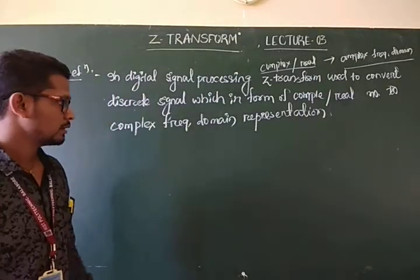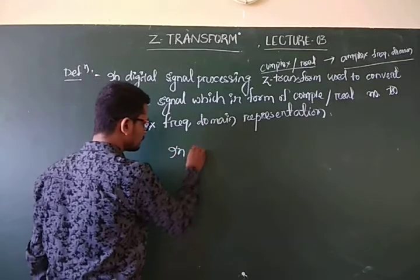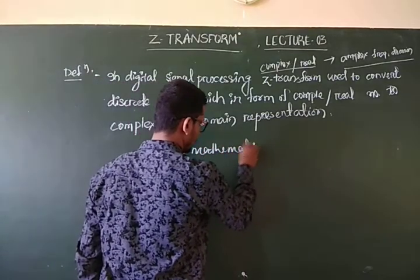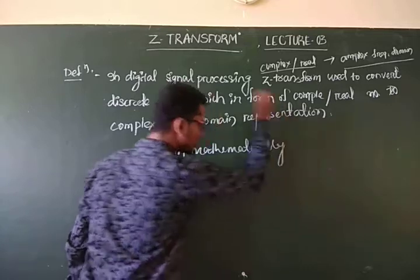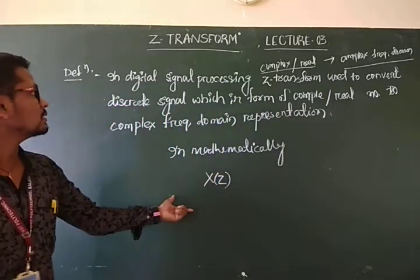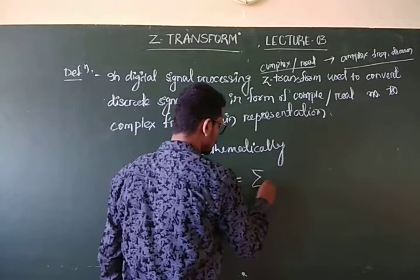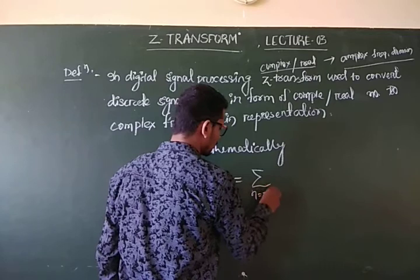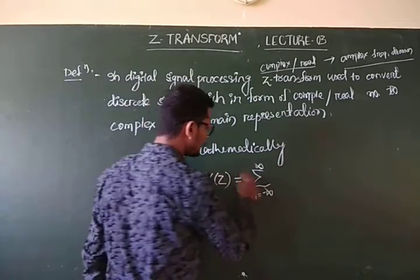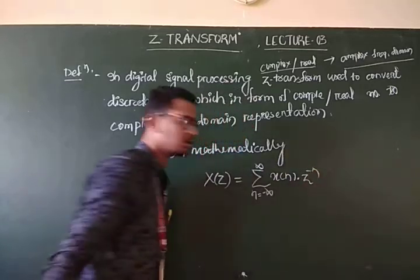This is the definition. In mathematical expression, we can write it as X of Z, where X(Z) is equal to the summation over n from minus infinity to plus infinity of x(n) into Z to the power minus n.